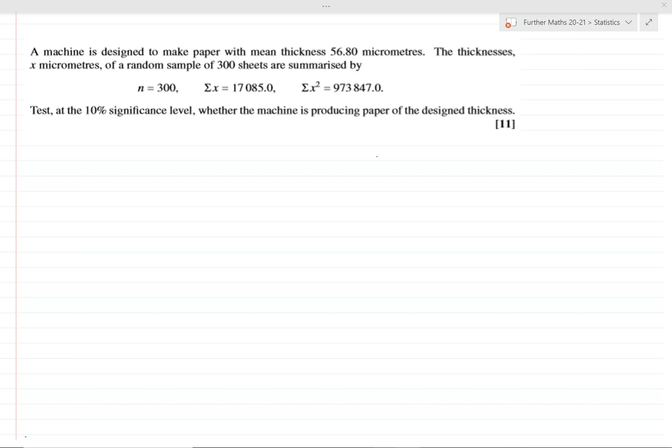Let's set up our hypotheses. It's about a machine producing paper of thickness 56.80 micrometers, or at least we presume that's the presumed mean under our null hypothesis. That's what we're testing.